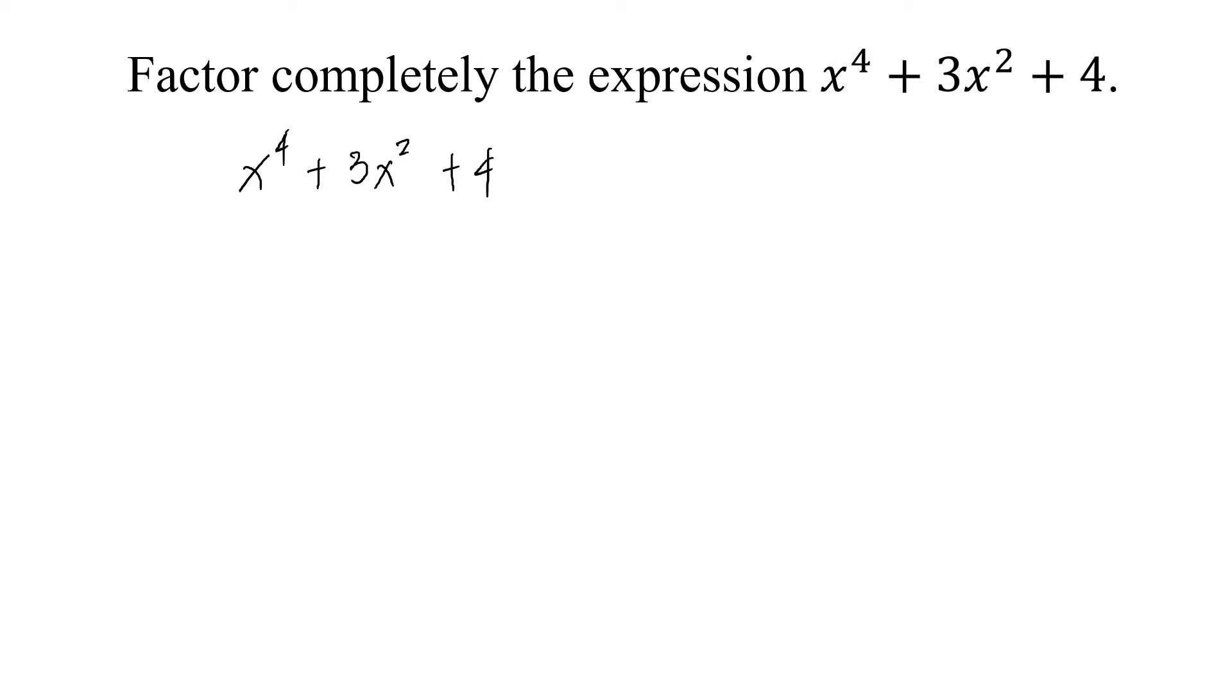We know that the perfect square trinomial is of the form a squared plus 2ab plus b squared. The square root of x to the fourth is x squared, and the square root of 4 is 2.